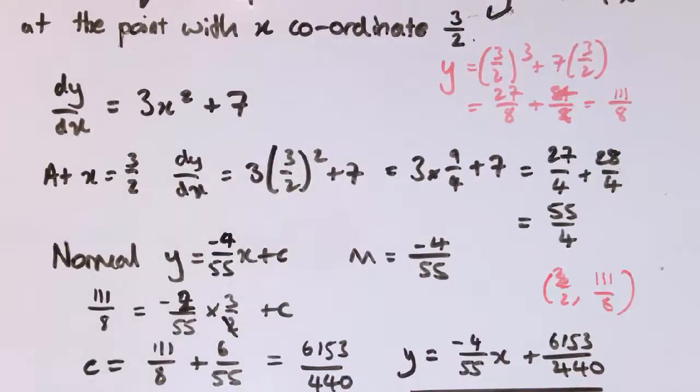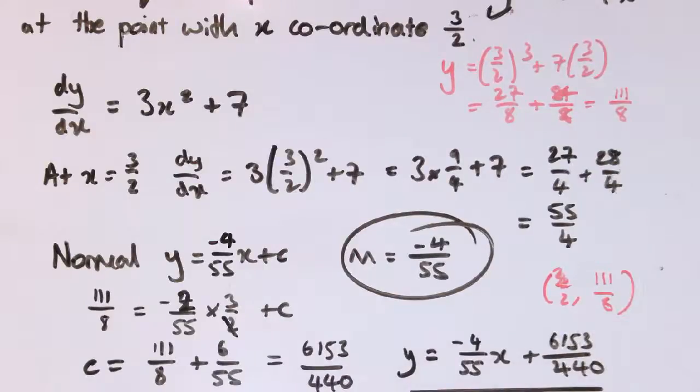So that's how to find the normal to a curve, very similar to finding the tangent to the curve. It's just at that key point where we're looking for the gradient of the straight line, we take the negative reciprocal before we carry on. Everything else exactly the same.